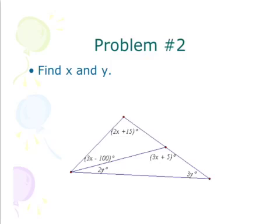is that these two added together equal my exterior angle. So what I'm going to do is I'm going to take 3x minus 100 plus 2x plus 15 and set it equal to 3x plus 5. And I'm going to solve for x.